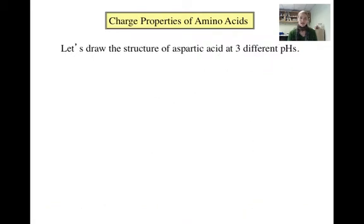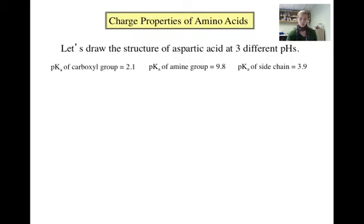What if the amino acid has an ionizable R group, otherwise known as a side chain, as well? The protonation of the R group depends on the pH of the solution in the same way as the protonation of the carboxyl and amine groups. Aspartic acid, or aspartate, is an amino acid that has an ionizable R group. The pKa of its carboxyl group is 2.1, the pKa of its amine group is 9.8, and the pKa of its R group, or side chain, is 3.9. You should pause the video and try to draw the structures of aspartate at three different pHs on your own, then figure out the net charge on each structure.